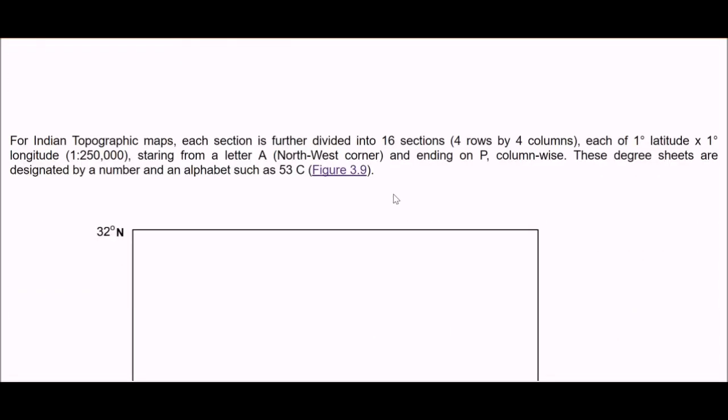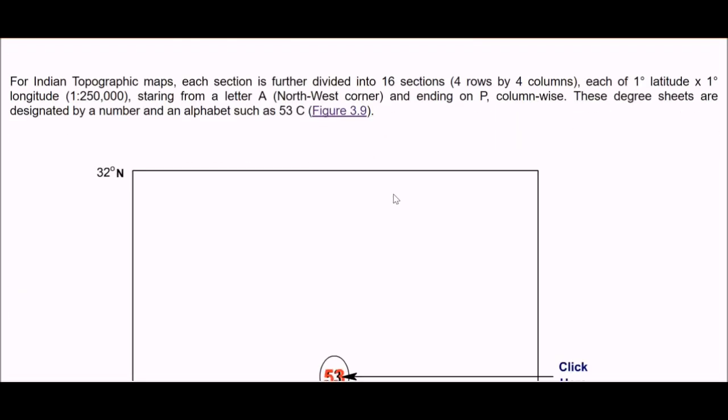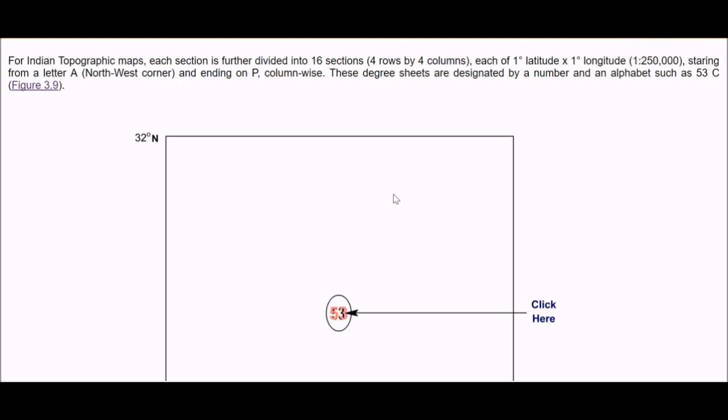Now when we go into more detail, for topographic maps, each section is then divided into 16 sections, that is 4 rows by 4 columns, each of 1 degree by 1 degree, that is 1 is to 250,000 starting from letter A at the northwest corner and ending at P column wise. These degree sheets are designated by number and alphabet such as 53C.